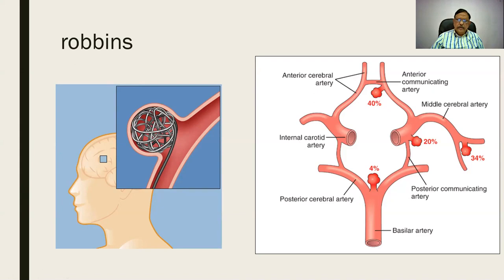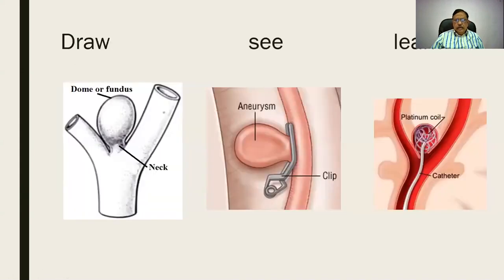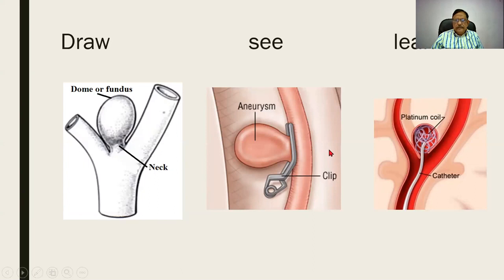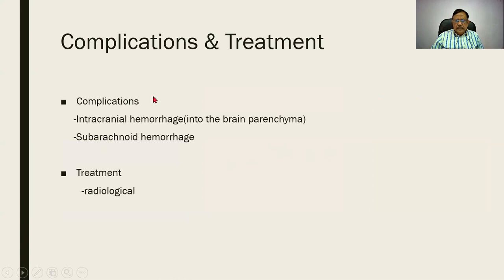This is the modern method of treatment of a berry aneurysm — a wire loop lodged by the radiology department using a catheter, which prevents rupture. Earlier there used to be clipping and cutting of the aneurysm. The complications are intracranial hemorrhage into the brain parenchyma or a subarachnoid hemorrhage. One clinical differential diagnosis will be hypertension, which can also cause these hemorrhages, and so that has to be differentiated. The treatment is radiological for a berry aneurysm.